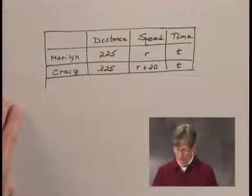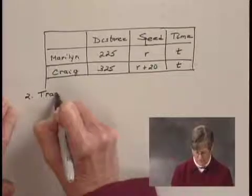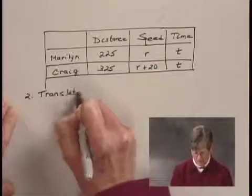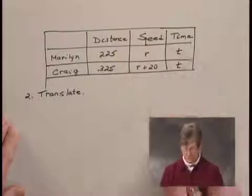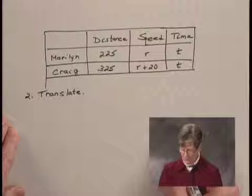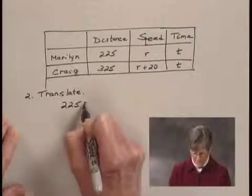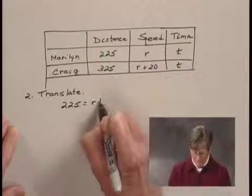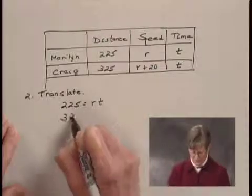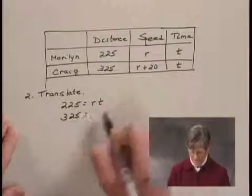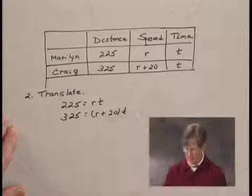Now, to translate to an equation, we'll use these two rows of the table. We know that distance equals speed times time, so the first row of the table tells us that 225 equals R times T. And the second row of the table tells us that that distance, 325, is equal to the speed R plus 20 times T.